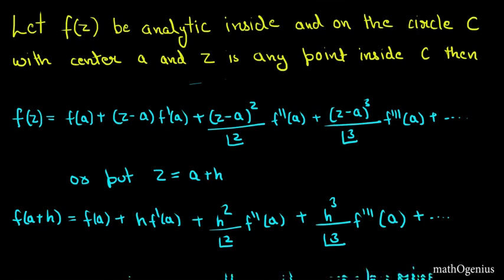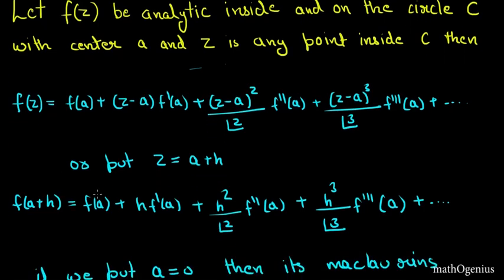Now if you know the Taylor series of real analysis, it is f(x) = f(a) + (x−a)f'(a) + (x−a)²/2! · f''(a) + ... It's just a change of x to z. But remember, z = x + iy, so this is not just a simple change of variable — it's a little bit different.